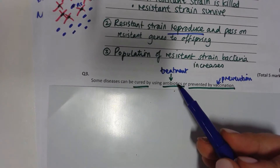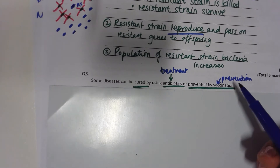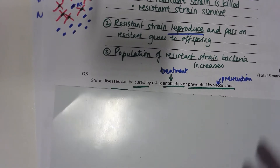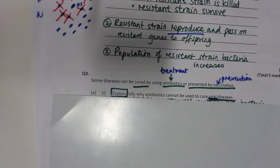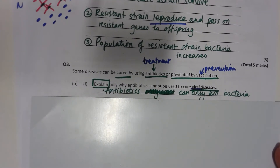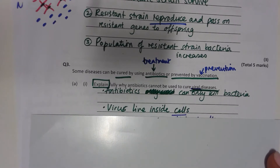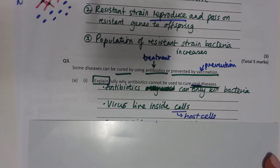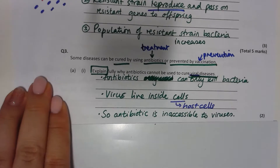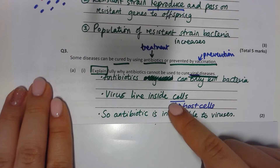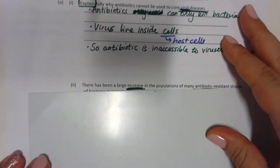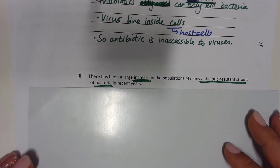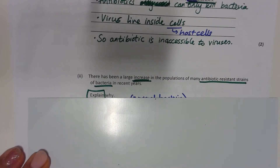Some diseases are treated by antibiotics and some are prevented by vaccination — note the difference between treatment and preventative measure. Explain why antibiotics cannot cure viral diseases: firstly, antibiotics can only kill bacteria. Secondly, viruses live inside host cells, so the antibiotics are inaccessible — they can't reach the viruses because they are inside the host cells.